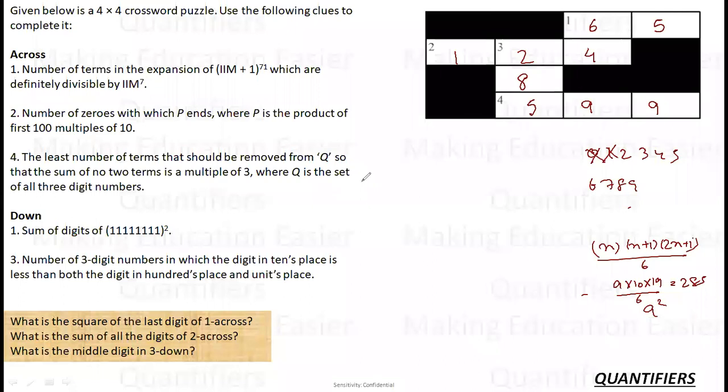Now, let's observe a pattern. 1 square is 1. 11 square is 1, 2, 1. 111 square is 1, 2, 3, 2, 1. 1111 square is 1, 2, 3, 4, 3, 2, 1. So as many ones you have, the series goes up to that number and reverses. 4 ones are 1, 2, 3, 4 and reverse. 3 ones are 1, 2, 3 and reverse. 2 ones are 1, 2 and reverse.